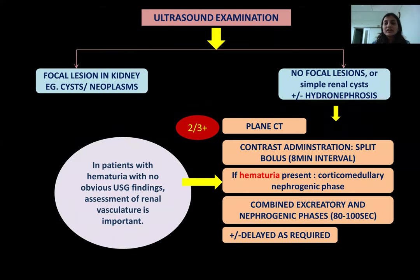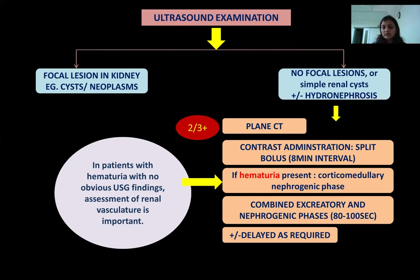As per ultrasound examination findings, protocols were decided. In patients with no focal lesions of kidneys or just a simple renal cyst on ultrasound, the split bolus method was used with only a combined excretory and nephrogenic phase — no separate corticomedullary phase was taken. In patients with hematuria showing no obvious ultrasound findings, renal vasculature assessment was important, so a corticomedullary nephrogenic phase was also required. In these cases, a total of 2 or 3 phases were taken.